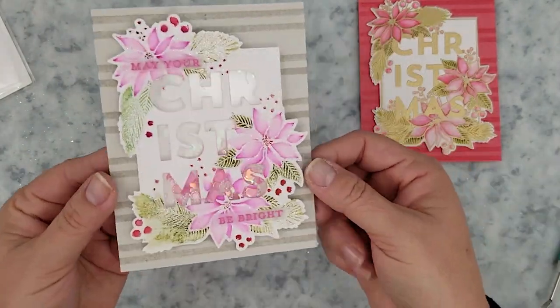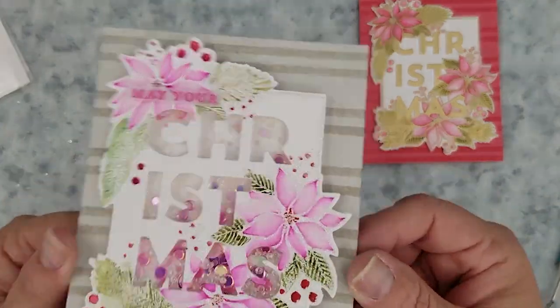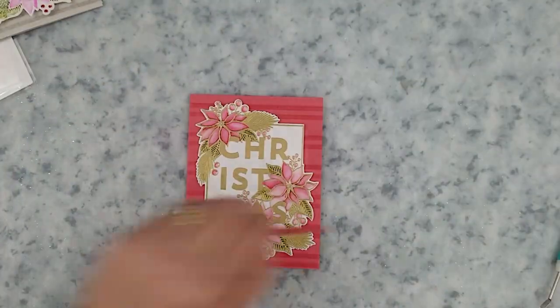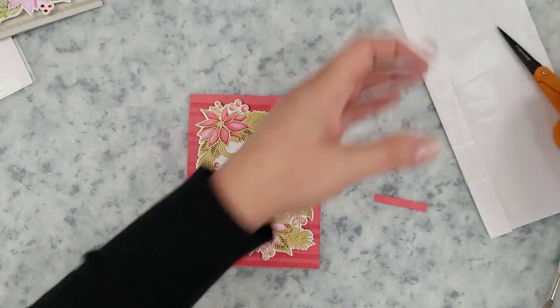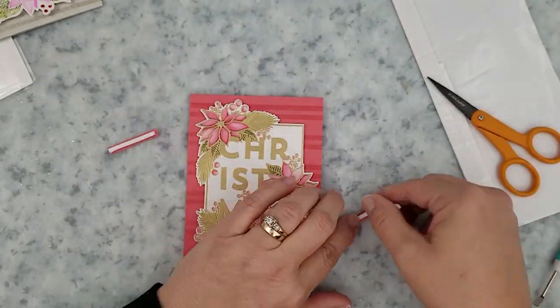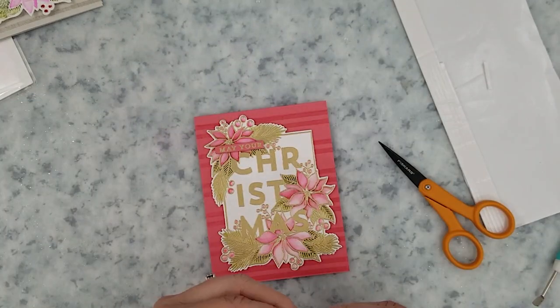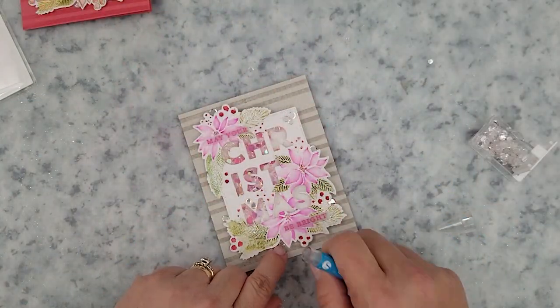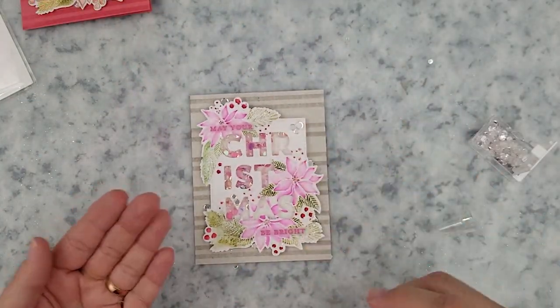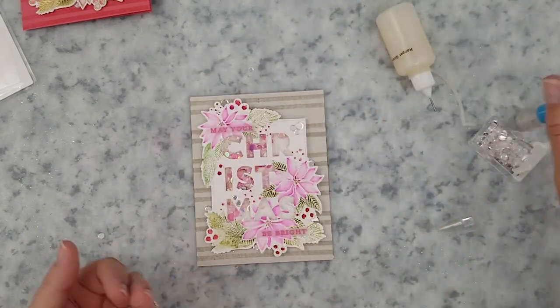I'm going to use Gorilla Glue clear mounting tape on the back of the vellum. You won't be able to see that through that vellum. We're going to adhere those sentiments and then use white foam strips to add the sentiments to that Think Pink card. We're going to finish this off with some clear Moonshine confetti from Simon Says Stamp.